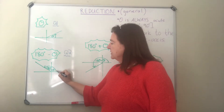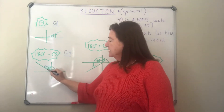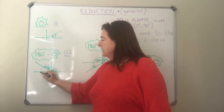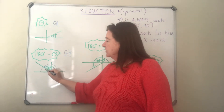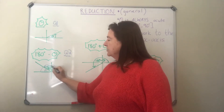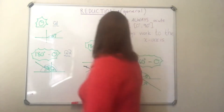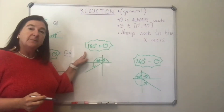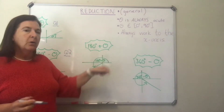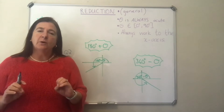It makes sense: 180 degrees minus theta is in the second quadrant because all the way to 180 we're subtracting the acute angle of theta, so this angle is always going to be in the second quadrant. The third case is 180 degrees plus theta — 180 plus theta always lies in the third quadrant because theta is acute.